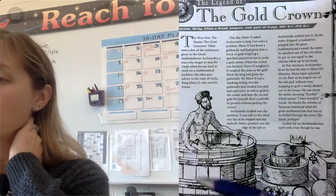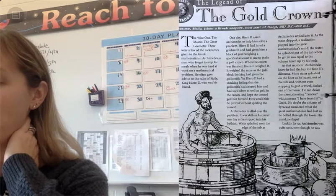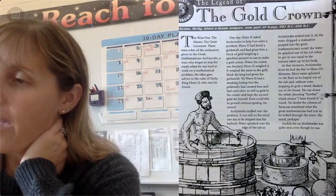One day, Hero asked Archimedes to help him solve a problem. Hero had hired a goldsmith and had given him a block of gold weighing a specified amount to use to make a gold crown.